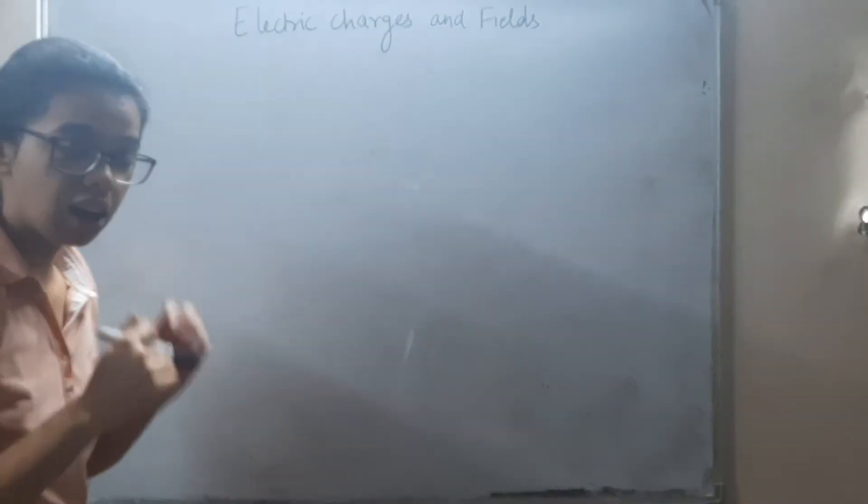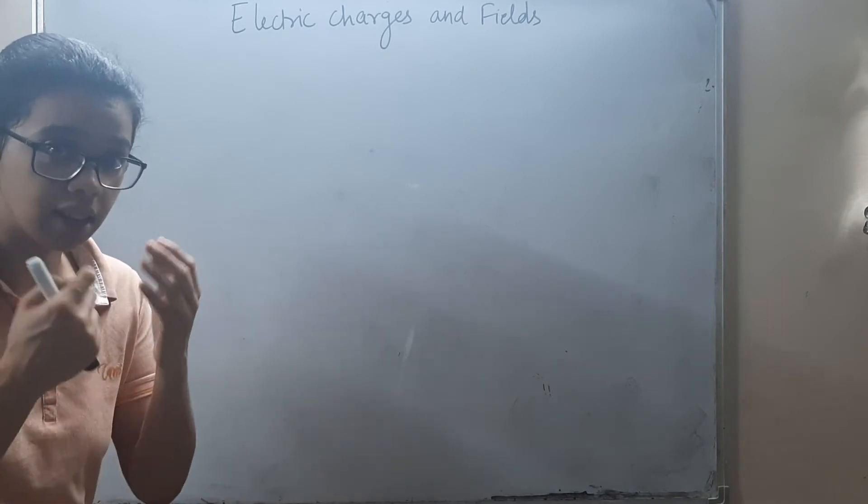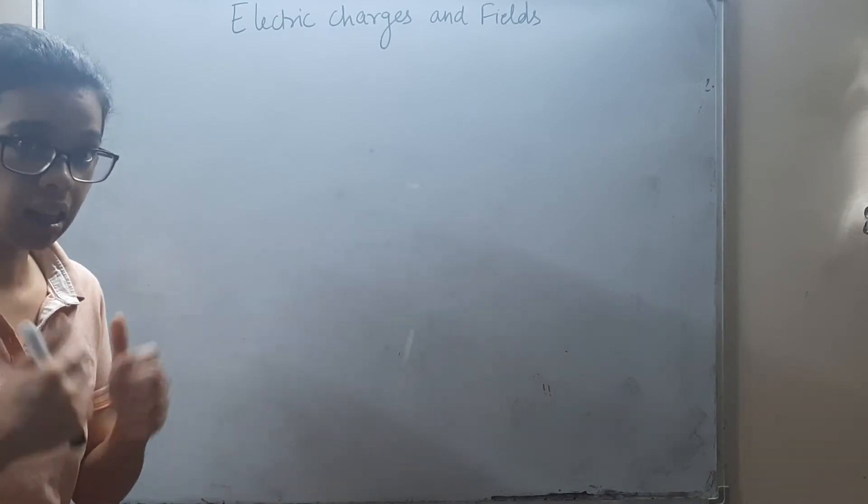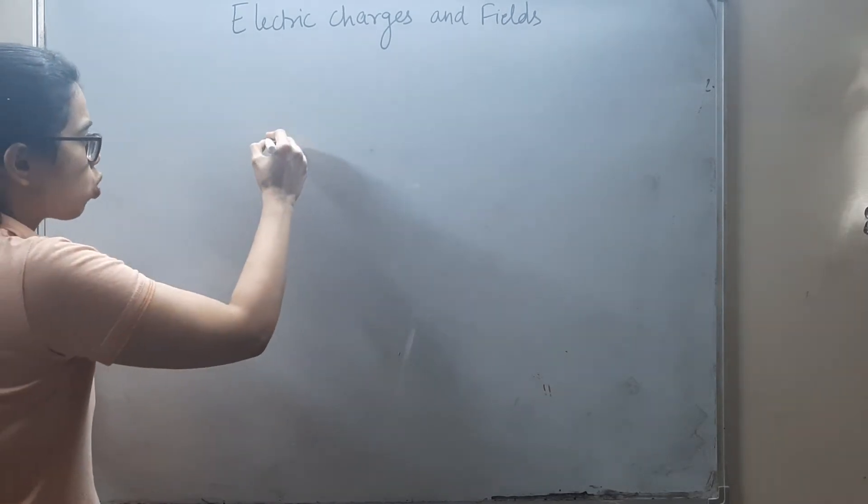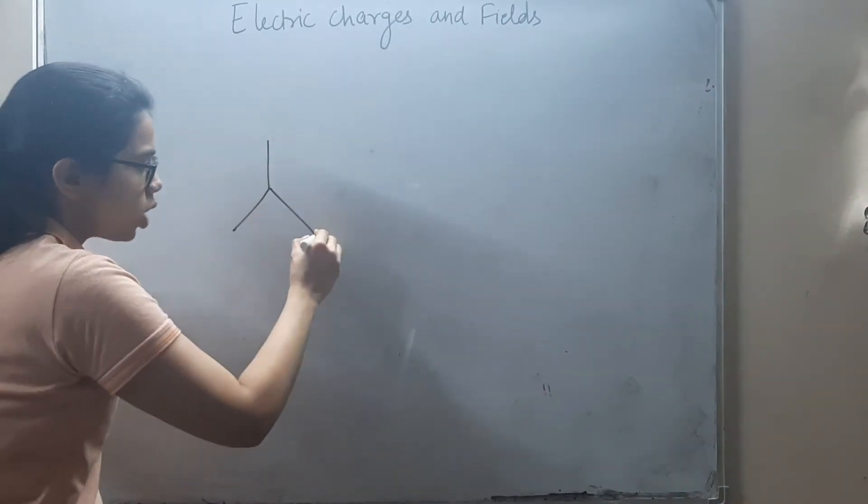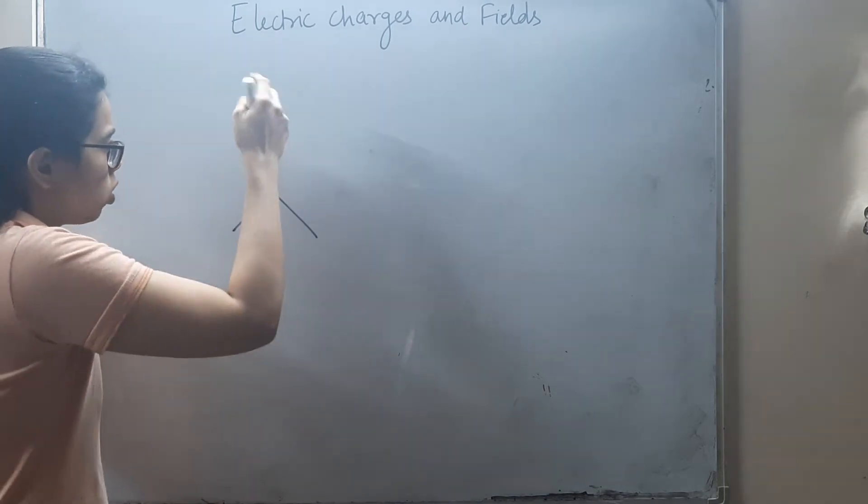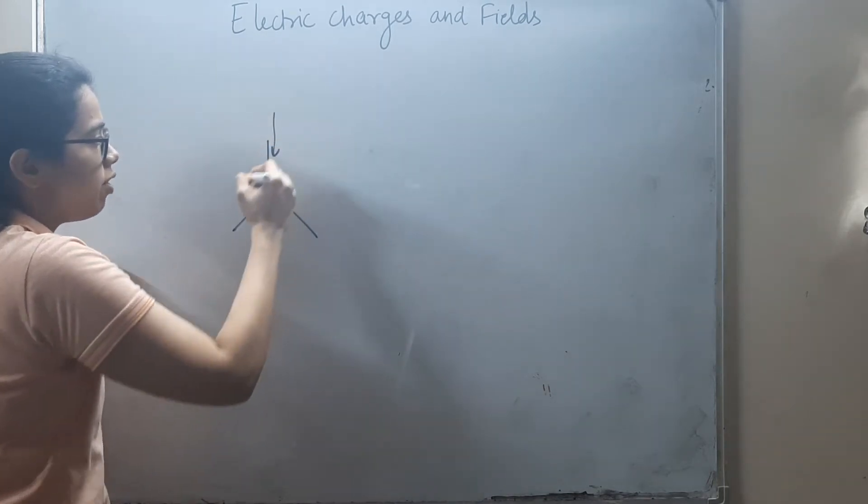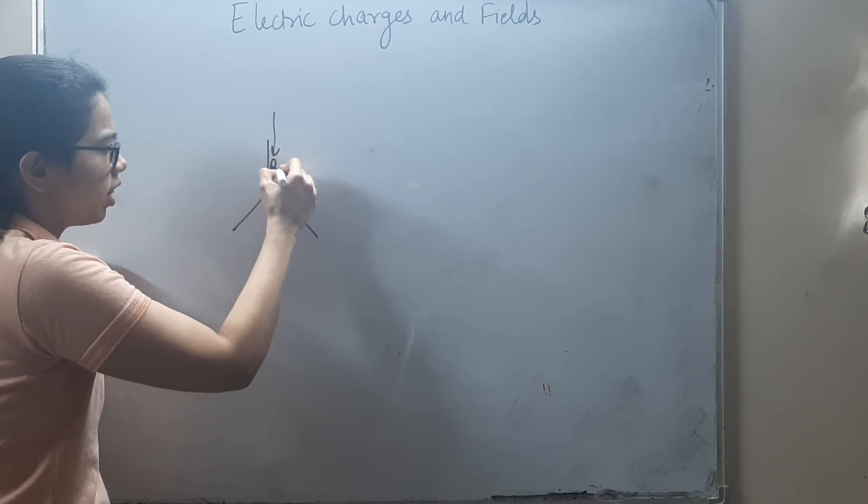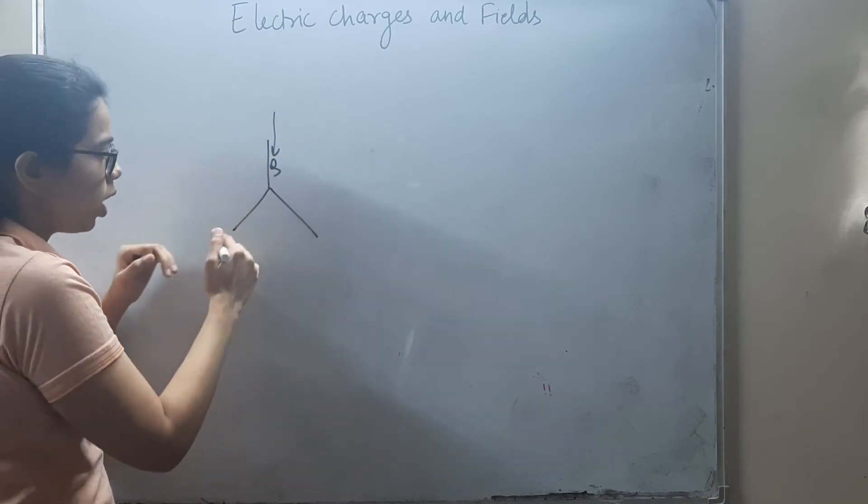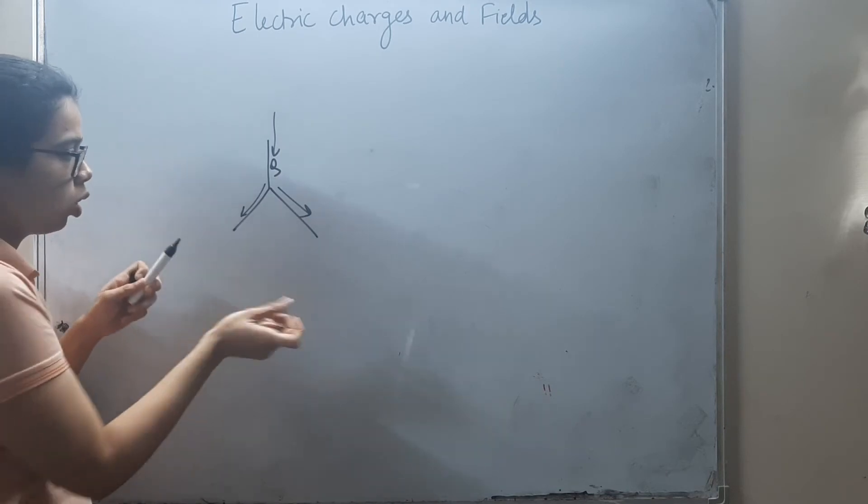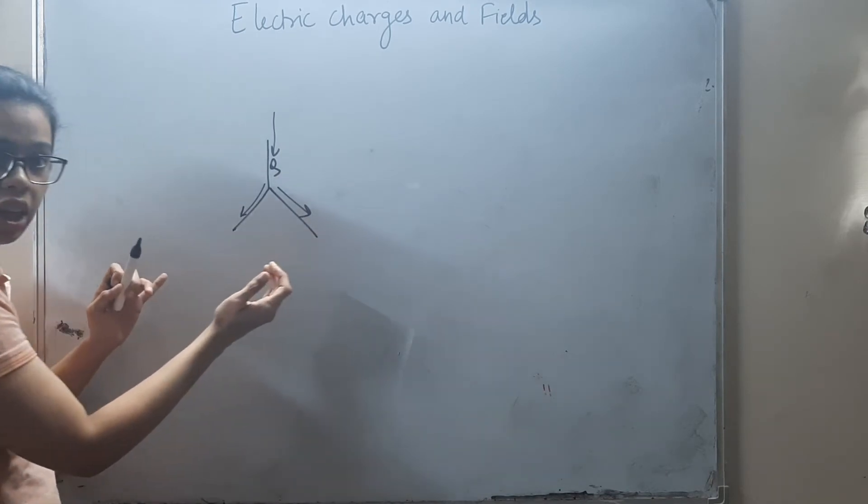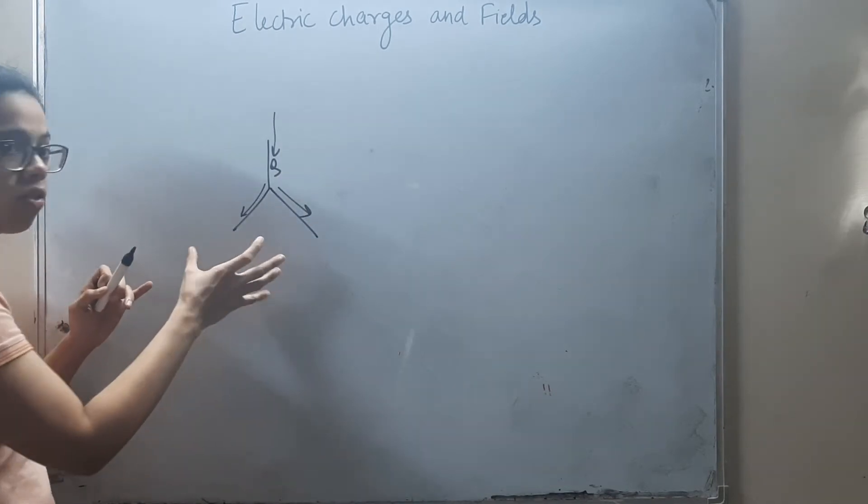Now we have seen how we charge a body, but how do we measure any charge? We use gold leaf electroscope. In gold leaf electroscope, there is a leaf. When we pass charge to this gold leaf electroscope, the charge distributes in these leaves. The amount the leaves diverge is proportional to the amount of charge.